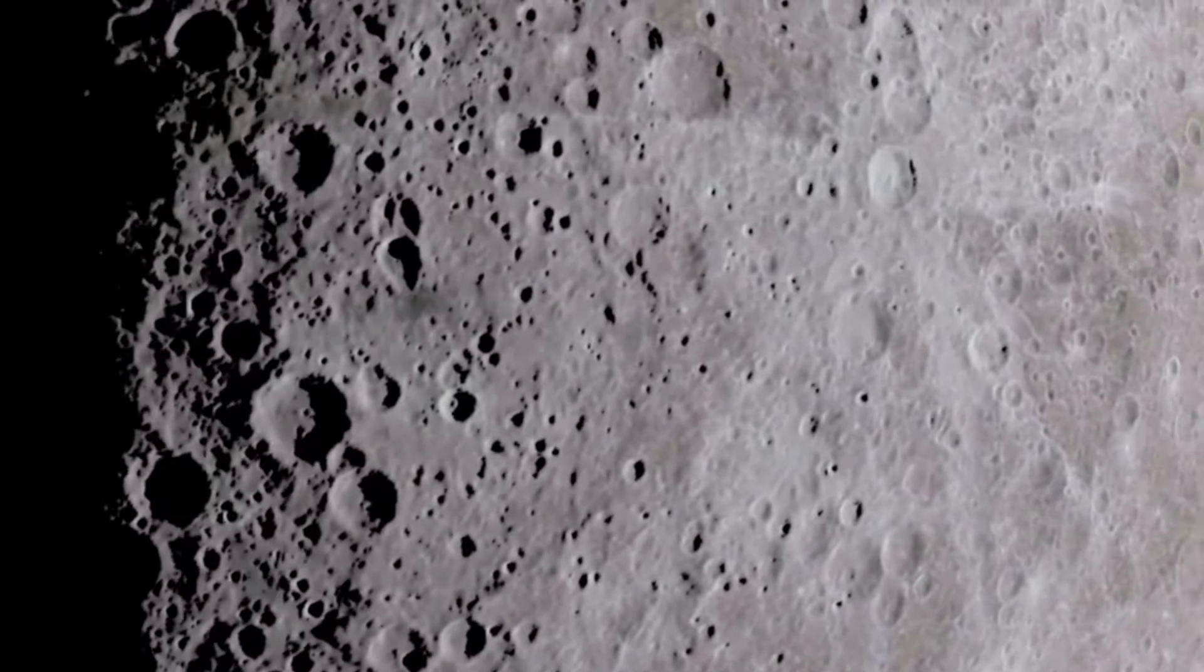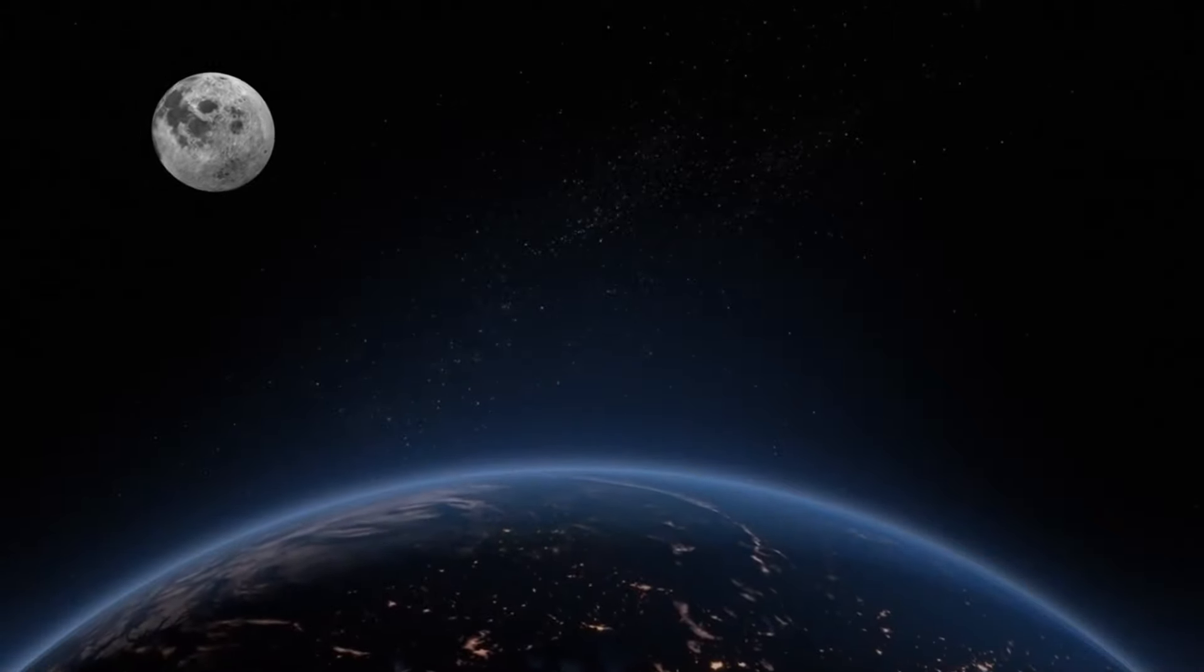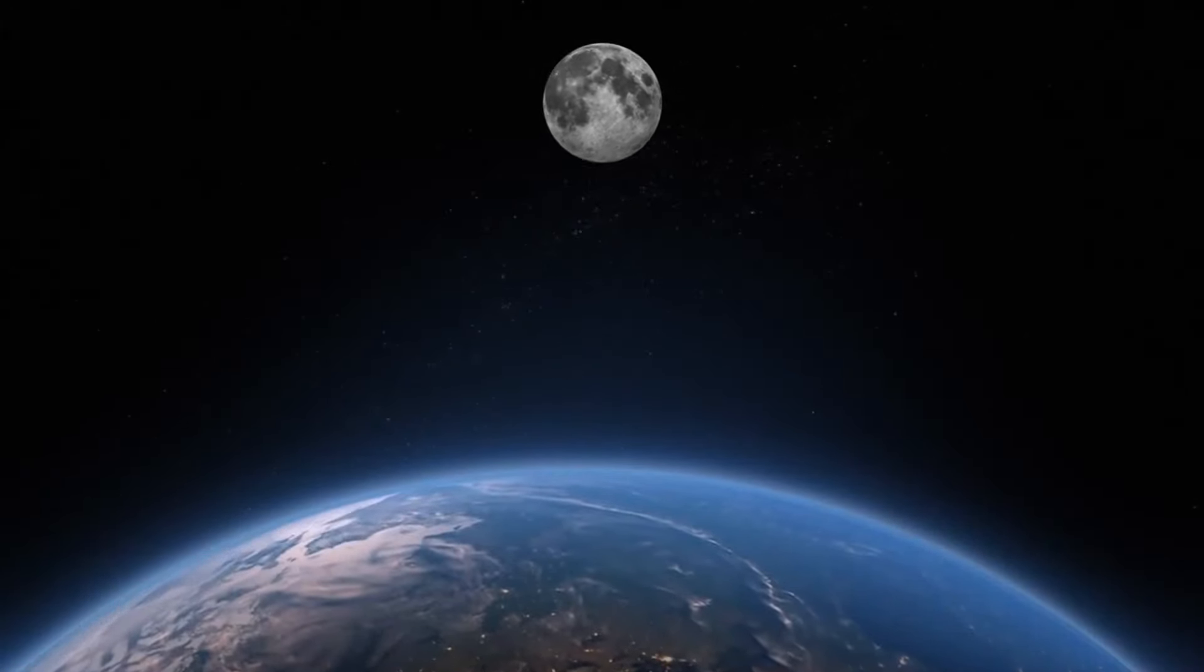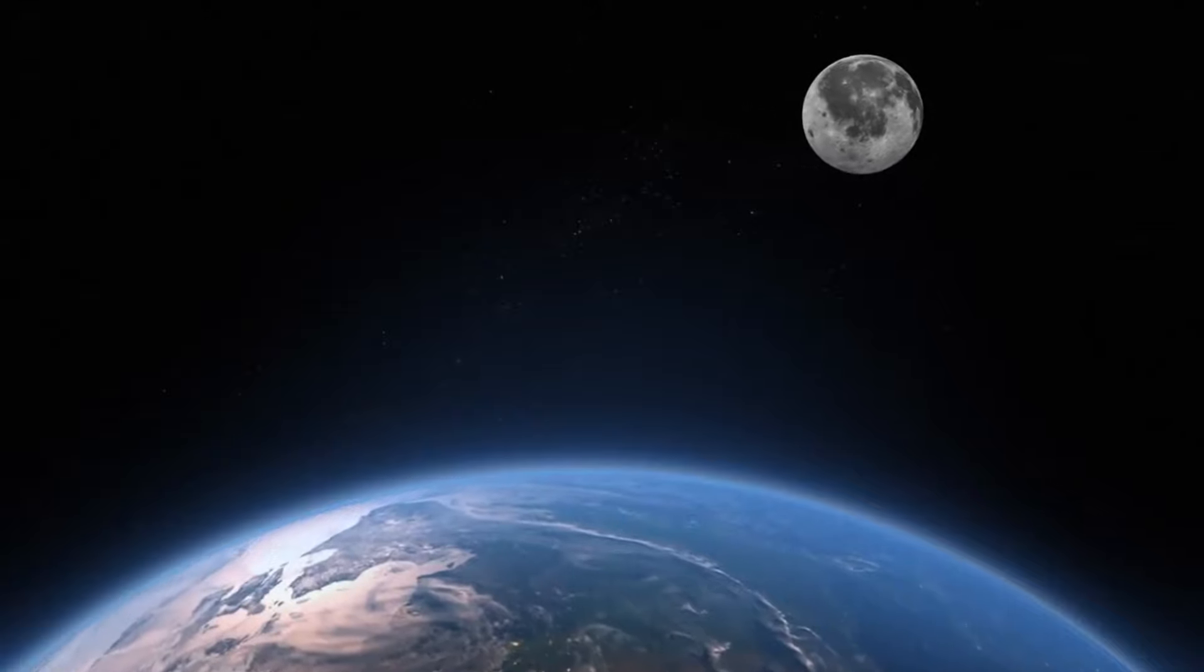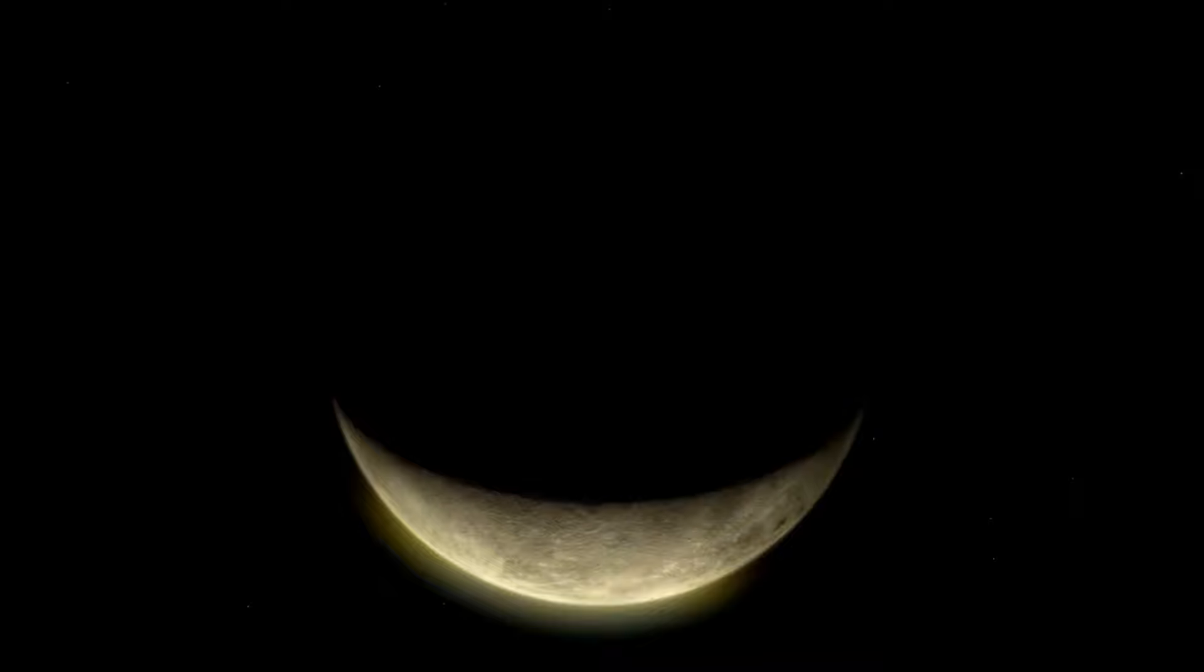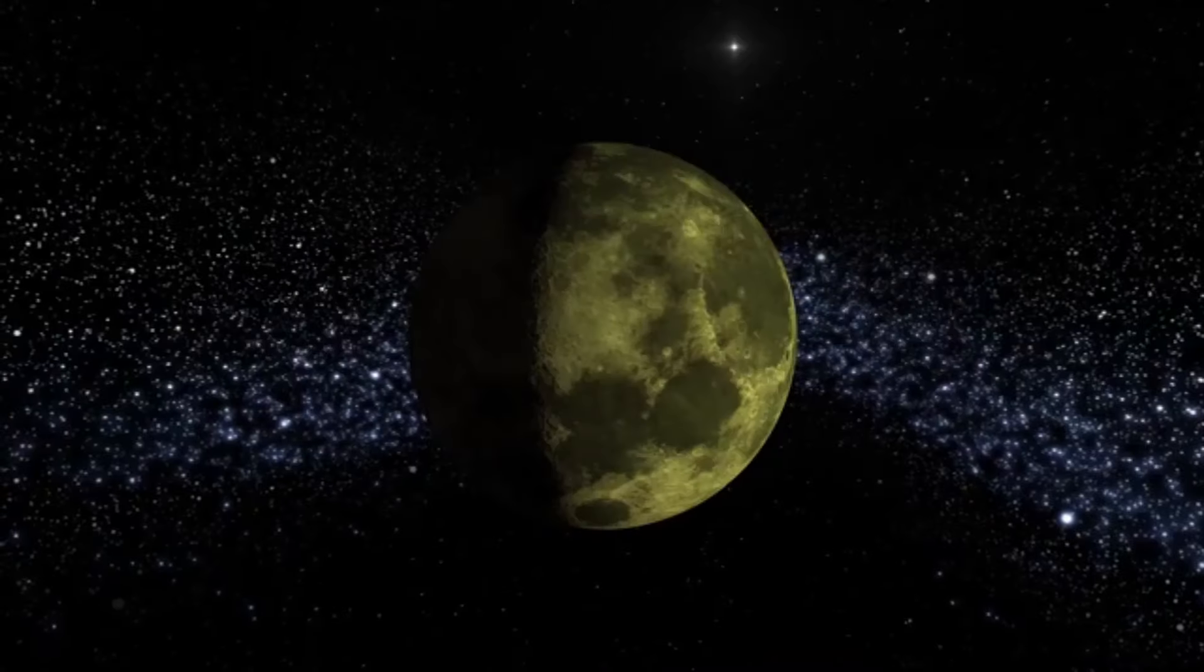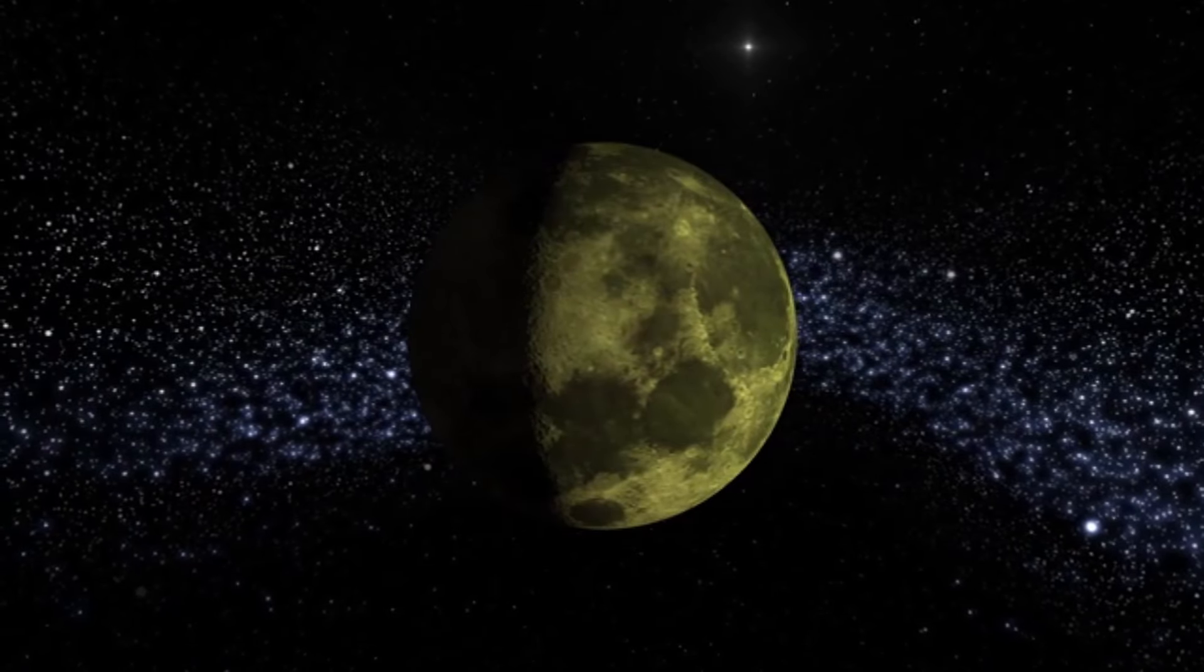As New Horizons journeyed through space at an astonishing speed of 32,300 miles per hour, it captured detailed images of Pluto's near side during its closest approach. However, due to the spacecraft's trajectory and the position of the sun, Pluto's far side, often referred to as the dark side, remained hidden from view.